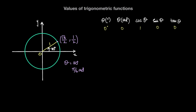When theta equals 30 degrees, or pi over 6 radians, the cosine of this angle is the x-coordinate of the point on the unit circle, which comes out to square root of 3 over 2. The y-coordinate comes out to 1 over 2. And the ratio of the y-coordinate to the x-coordinate — sine theta over cosine theta — gives tan of theta, which is 1 over root 3.